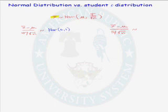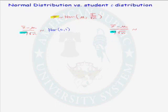But what happens when we don't know the population standard deviation sigma? In that case we have to estimate sigma with the sample standard deviation s. The question is: does this new random variable have a normal distribution? The answer is no — it has a t distribution with n minus 1 degrees of freedom.